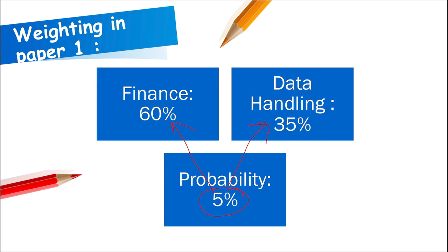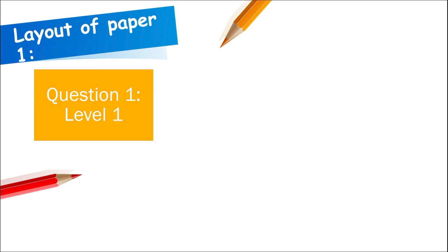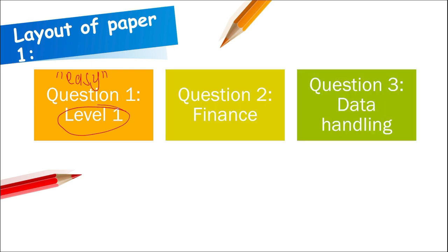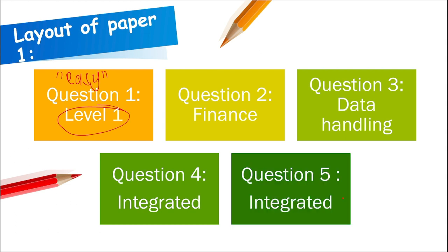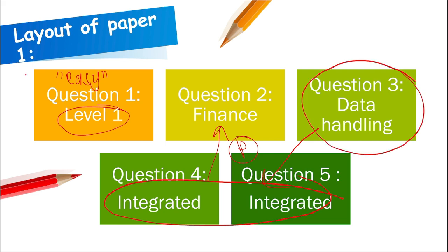Question one will be level one questions only — these are our easy-to-score questions, which is why I recommend you start with those. Question two will focus on Finance, three will focus on Data Handling, and questions four and five will be integrated questions containing both Finance, Data Handling, and some Probability. Knowing the layout helps you decide what your strengths are and start with questions you feel comfortable with.